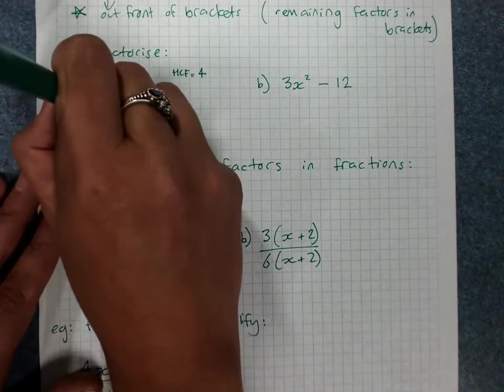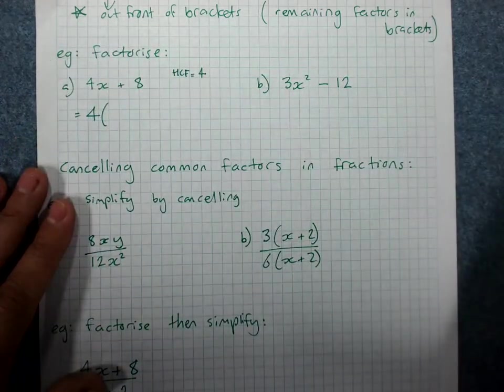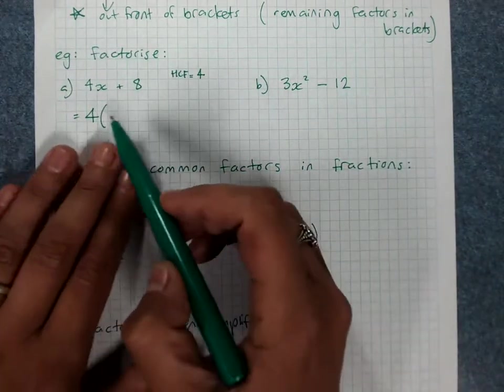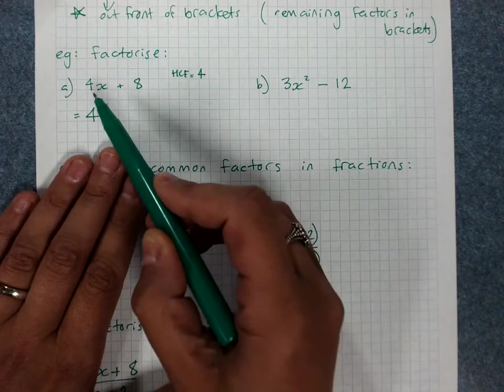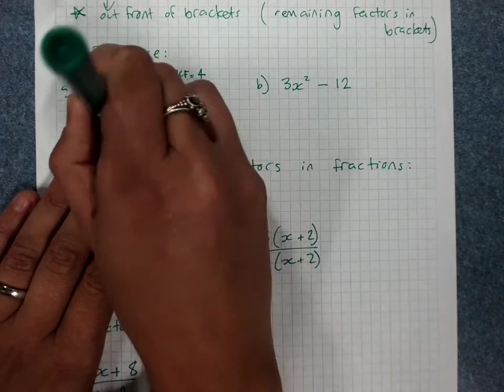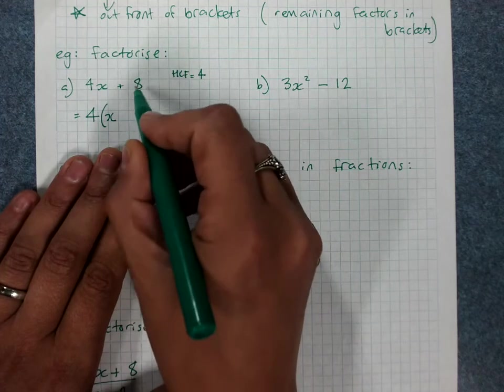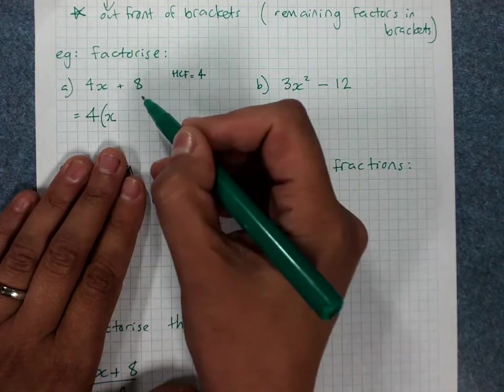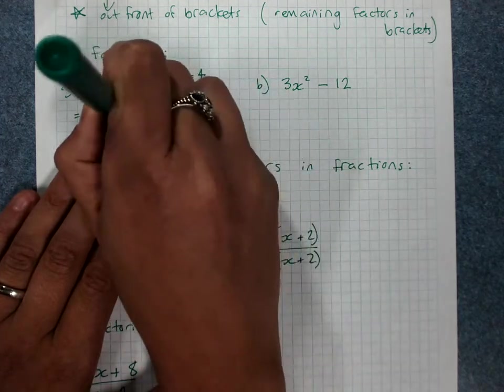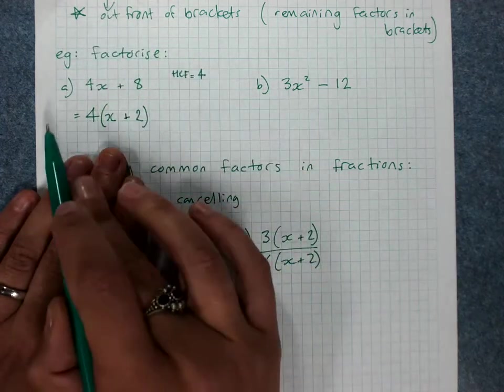So then, 4 out the front of the brackets. And you need to ask yourself, 4 times what gives me 4x? Well that would be x. 4 times what gives me positive 8? Well that would be 2, and it would be positive 2, so we write plus 2. You've factorised.